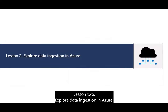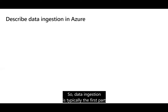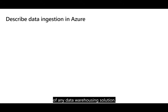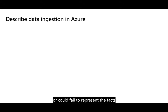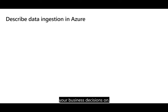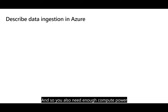Lesson 2: Explore Data Ingestion in Azure. Data ingestion is typically the first part of any data warehousing solution and is arguably the most important part, because if you lose any data at this point, any resulting information can be inaccurate and could fail to represent the facts you're basing your business decisions on. In a big data system, data ingestion has to be fast enough to capture almost all relevant data heading your way, and you also need enough compute power to process this data in a timely manner.